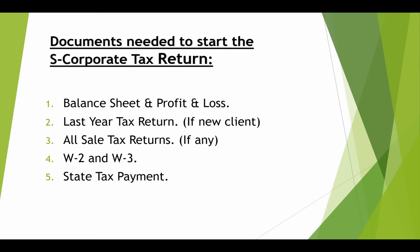Number four: W-2s and W-3s. As an S-corp, they should be paying their officer a salary, and if they have employees, they should be paying them through a W-2. The W-2 and W-3 will show the amounts paid to the officer and employees. We want to differentiate them — there's a line for officer compensation and a line for employees — and tie the tax return to match the W-2s reported at year end.